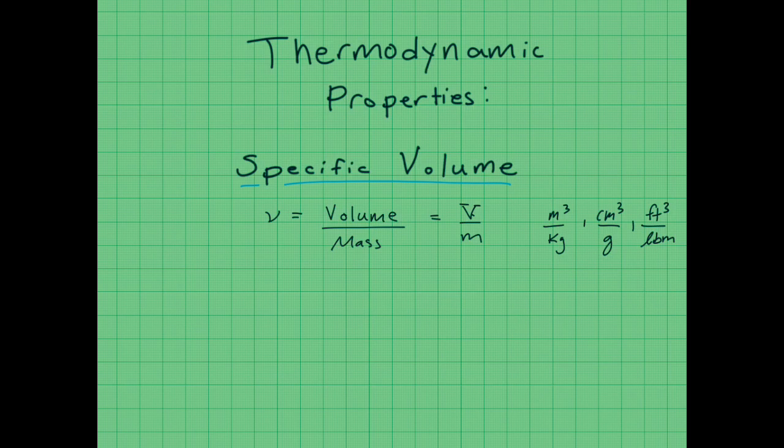Now, specific volume is very closely related to density. Density is Greek letter rho, and density is the ratio of mass to volume. So it's exactly the reciprocal of the specific volume. So it's m over v, or 1 over specific volume.